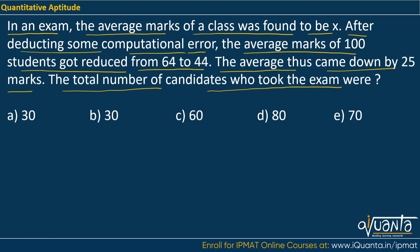Let us assume that the number of students in the class was n. Since we are talking about the average here, average is sum of all observations upon number of observations. So if I write the sum of marks of all the students, it will be number of students into the average marks, which is x. So n into x will be the sum of marks of all students. To find out the average we will divide this by n, and this will be my average.